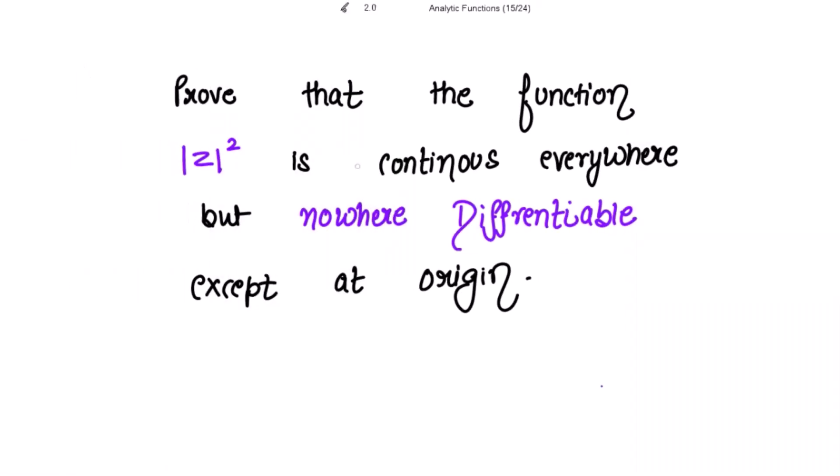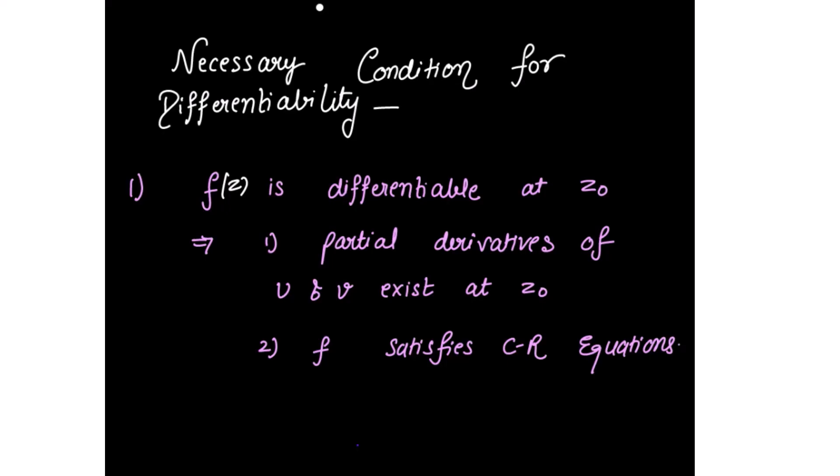We need to prove that the function |z|² is continuous everywhere but nowhere differentiable except at the origin. So we have to show that the function is everywhere continuous but differentiable only at the origin. Let's recall some of the necessary conditions for differentiability.